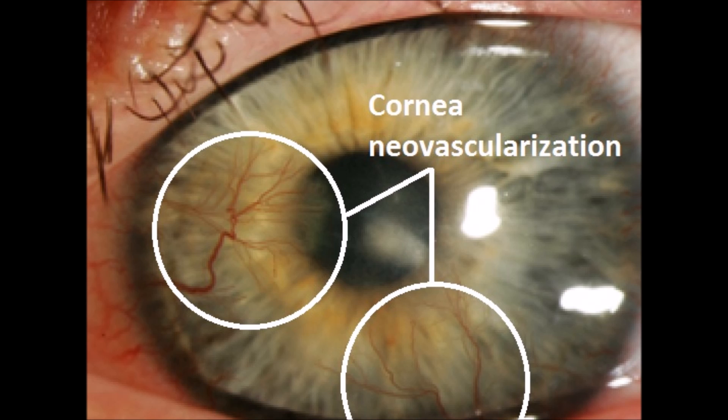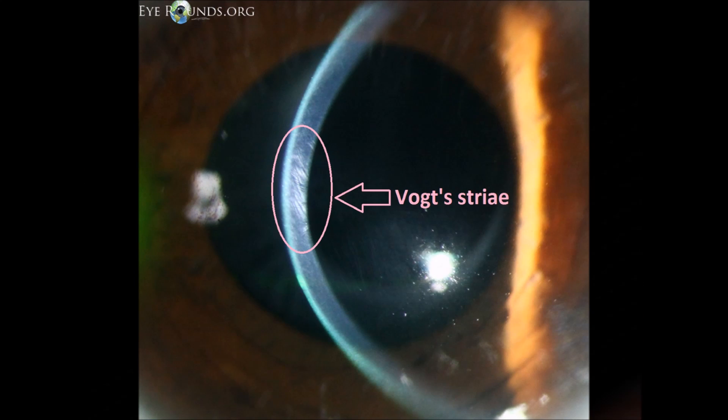Neovascularization is the growth of new blood vessels towards the cornea due to lack of oxygen. Vogt's striae are vertical fine whitish lines formed during keratoconus due to mechanical stress forces.